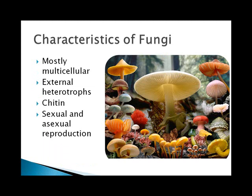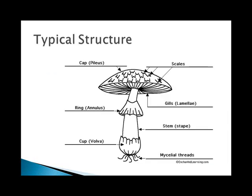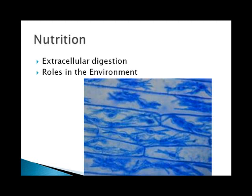Fungi are typically multicellular. They're all external heterotrophs, which means they digest their food outside of their bodies and then absorb it. Their cell walls are made of chitin, and they can reproduce both sexually and asexually. This is the typical structure of a fruiting body of a club fungus — the type of mushroom people eat — with a cap and a stalk. The key focus is the mycelia. Fungi perform extracellular digestion and often serve as decomposers, parasites, or mutualists. If they are parasites, they use special structures called haustoria, which send out digestive enzymes and then absorb the nutrients.